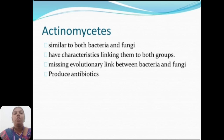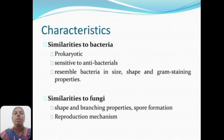Actinomycetes are similar to both bacteria and fungi, having characteristics linking them to both groups. They are considered the missing evolutionary link between bacteria and fungi and produce antibiotics. Similar to bacteria: they are prokaryotic and sensitive to antibacterials, and resemble bacteria in shape and gram-staining properties. Similar to fungi: in shape and branching properties, spore formation, and reproduction mechanism.